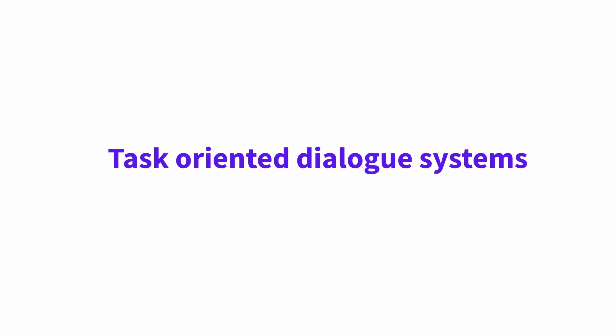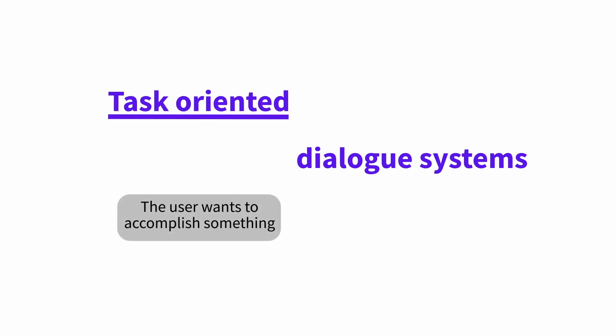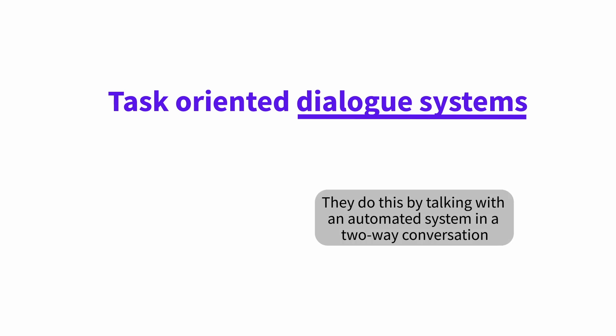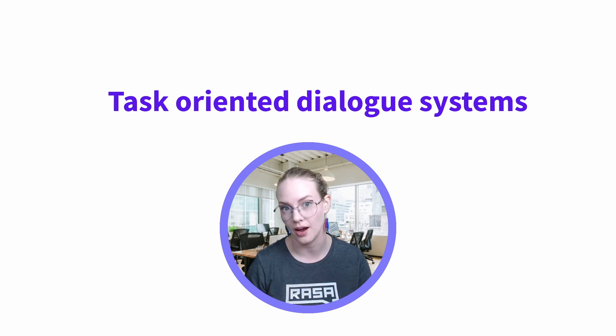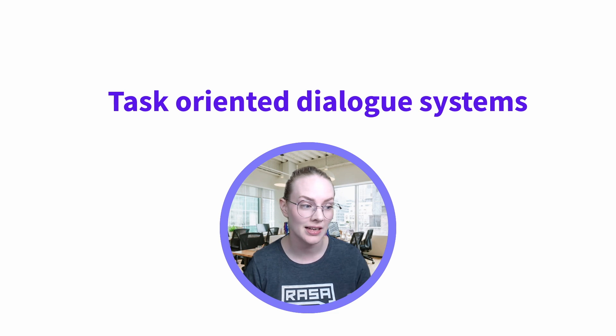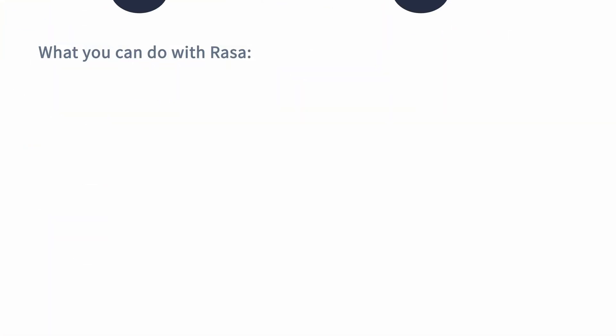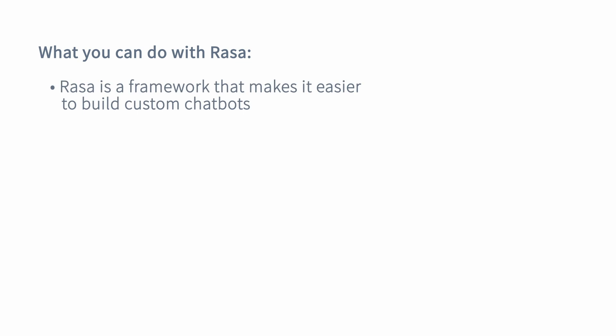Raza is designed to help you build a specific type of conversational system, which is a task-oriented dialogue system. Task-oriented means the user wants to do something specifically — they have a task they want to achieve — and a dialogue system means they achieve that task by talking to an automated system in a two-way conversation. This is different from a chit-chat bot, where the goal is just to have an ongoing conversation but not necessarily to actually do anything in particular.